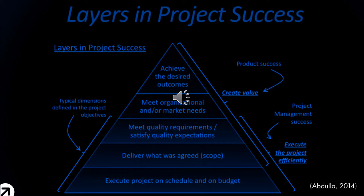This illustration breaks down the layers of project success. The first four layers describe the product success and create the value of the project. The last three layers define the project objectives and project management success.